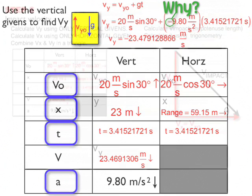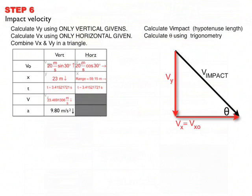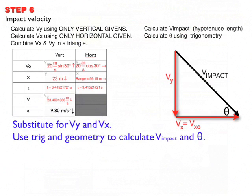So now let's go back to our givens. I'm going to substitute for Vx and Vy, and I'm going to use trigonometry to calculate the impact velocity and theta.